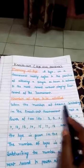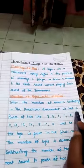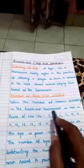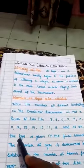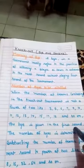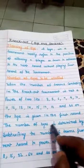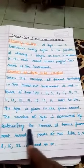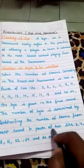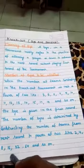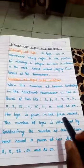Number of buys to be allotted: When the number of teams contesting in the knockout tournament is not a power of 2 — like 3, 5, 6, 7, 9, 10, and so on — the buy is given in the first round. The number of buys is determined by subtracting the number of teams from the next higher power of 2 — like 2, 4, 8, 16, 32, 64, and so on. Those are called buy teams.